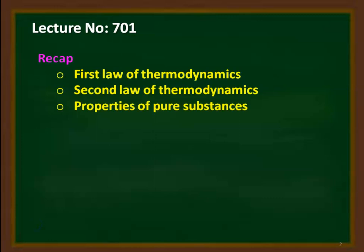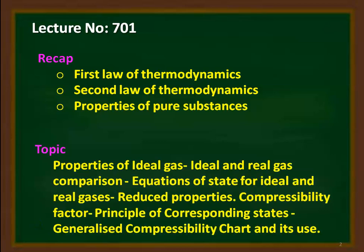We recap from the previous lectures. Earlier, we discussed the first law of thermodynamics and applied it to various processes in open systems and closed systems. We discussed the second law of thermodynamics and solved problems on refrigerators, heat engines, heat pumps, and entropy. We also studied pure substances, properties of steam, and solved related problems. With this background, we now take up the properties of ideal and real gases.